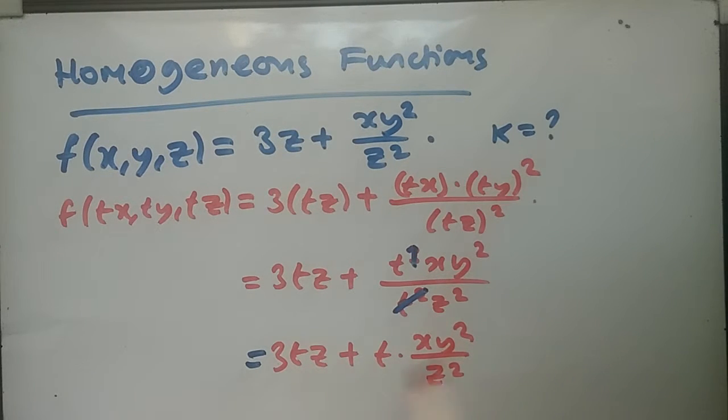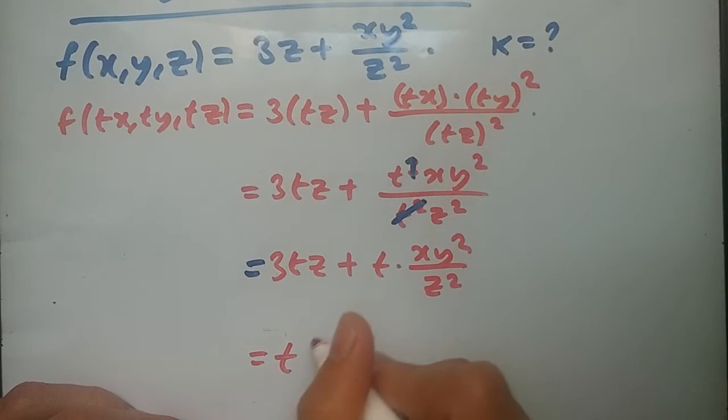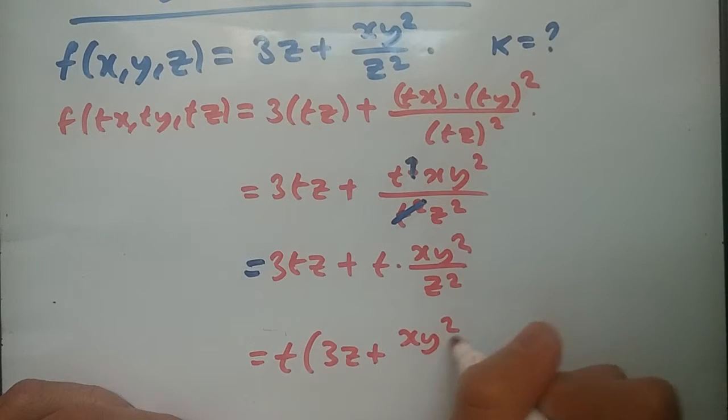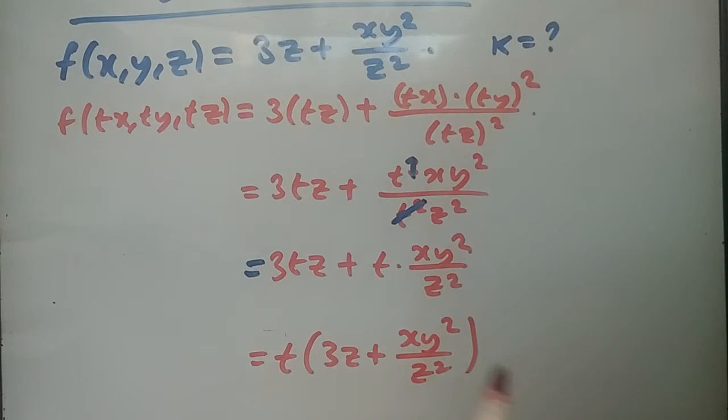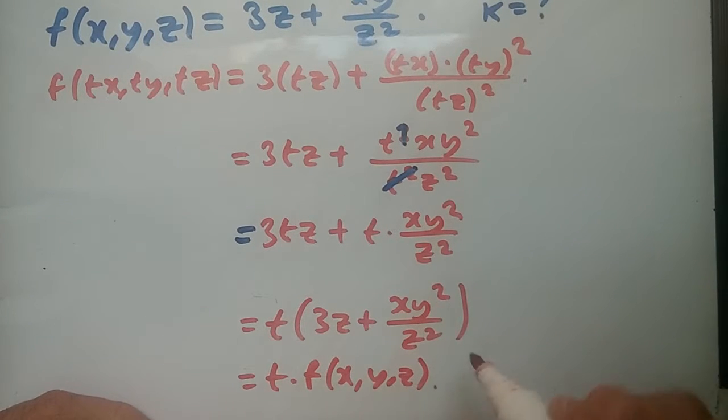And check it out, if you factorize this out, factorizing terms, we're going to have t outside and we're going to have 3z plus xy squared over z squared. And voila, as you recall, see this term here equals the function up here. So this would be t times the function f(x, y, z) and this is basically t to power 1. So that means k equals 1. So this function has homogeneity of degree 1. And that's it.